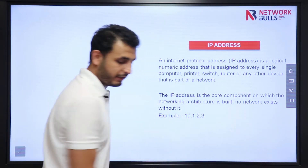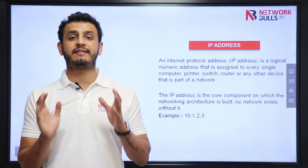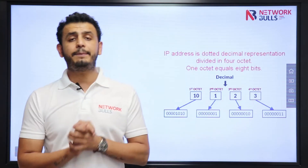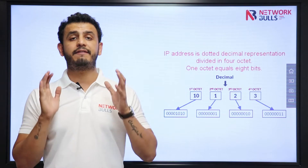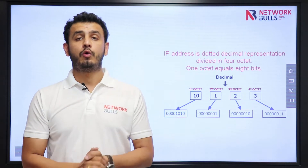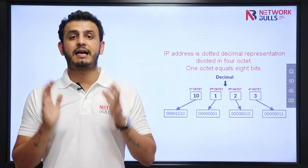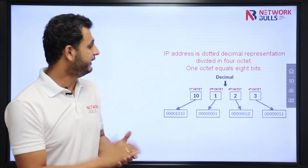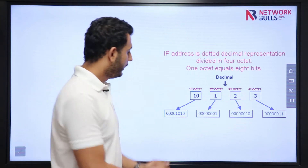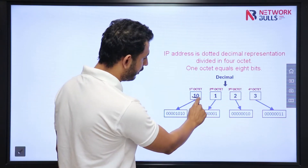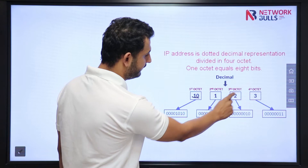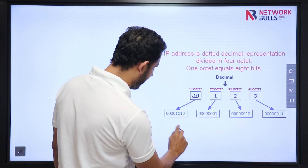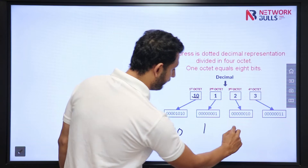Now the question is how IP address looks like? IP address is divided into four octets which are divided by dots. Here you can see I have four octets — first octet, second, third, and fourth. These octets are divided by dots.